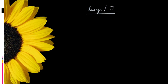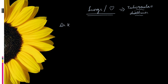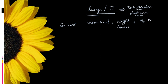Now for the action of Agaricus on the lungs and heart: Babu suffers from tubercular diathesis. Dr. Kent mentioned that if a patient has a catarrhal condition in the lung along with anxious night sweats, and has a history of nervous symptoms, we can think about Agaricus. One interesting feature is that the cough always ends in a sneeze.